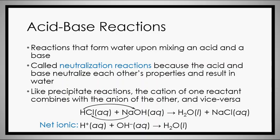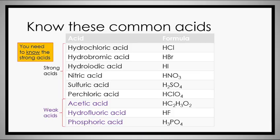When talking about acids, there are only six strong acids you need to be familiar with — really the only six we classify as strong. Hydrochloric, hydrobromic, and hydroiodic are your strong binary acids, while nitric, sulfuric, and perchloric are your strong oxy acids. All other acids — and there are plenty more — are going to be weak acids.